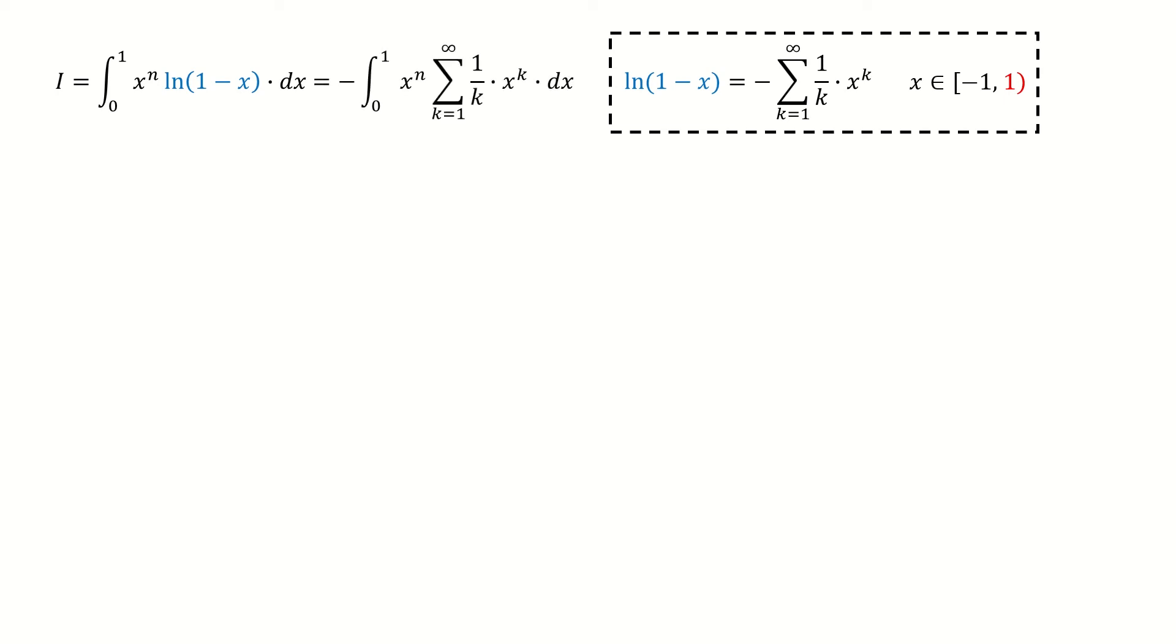Then we replace the logarithm function by this series, and we put this x^n term inside the series. Note here, because this series is divergent at 1, we can't switch the sum and integral, so we need to use some tricks.